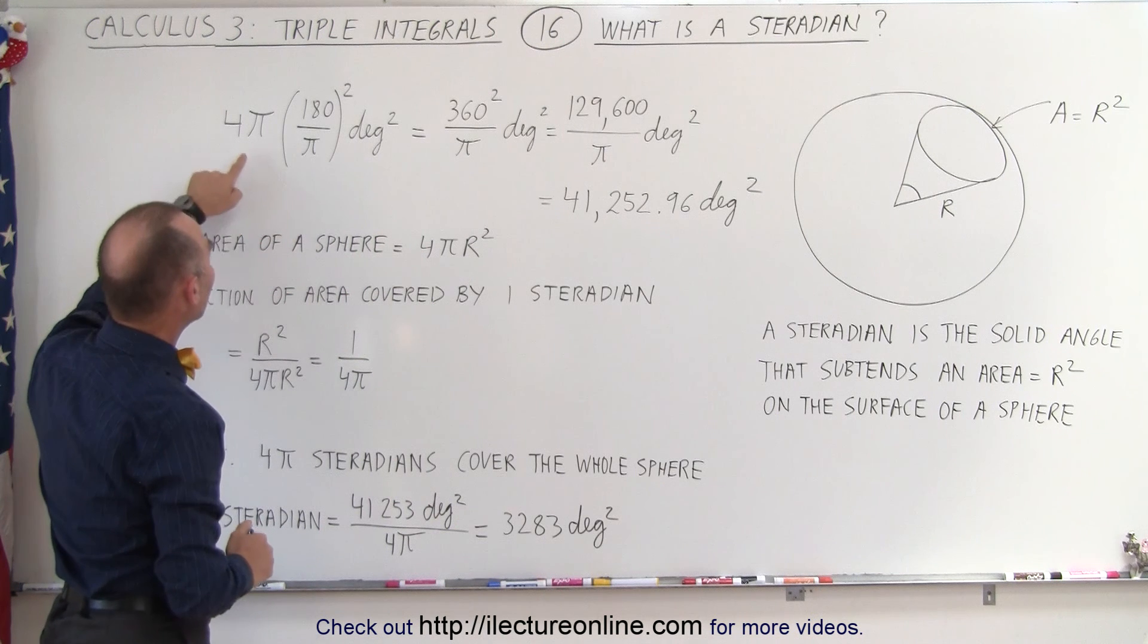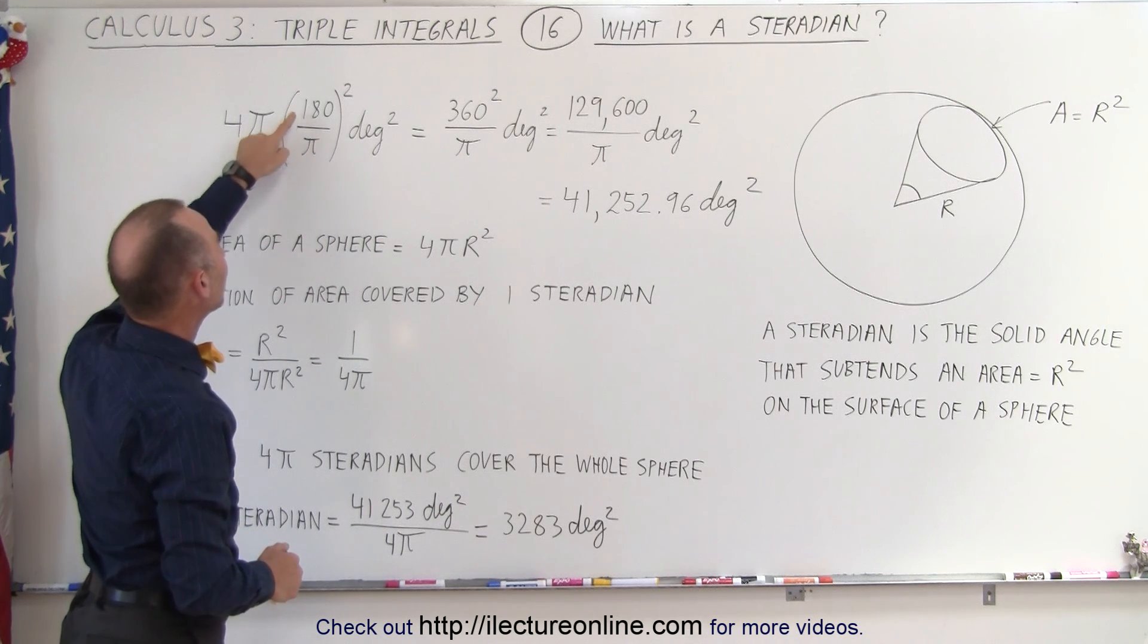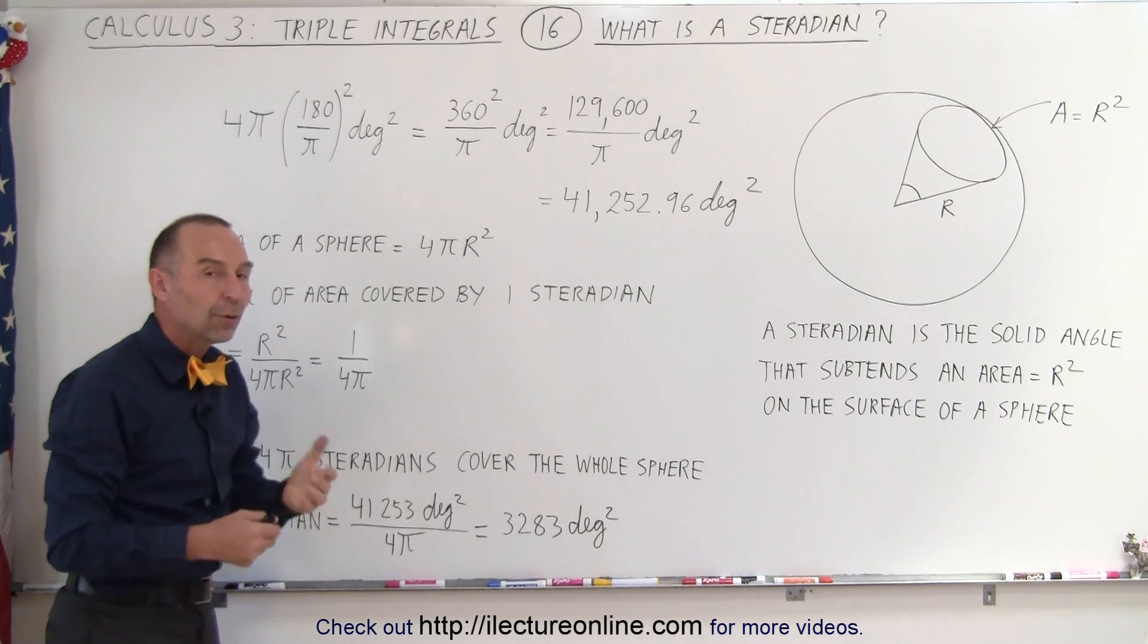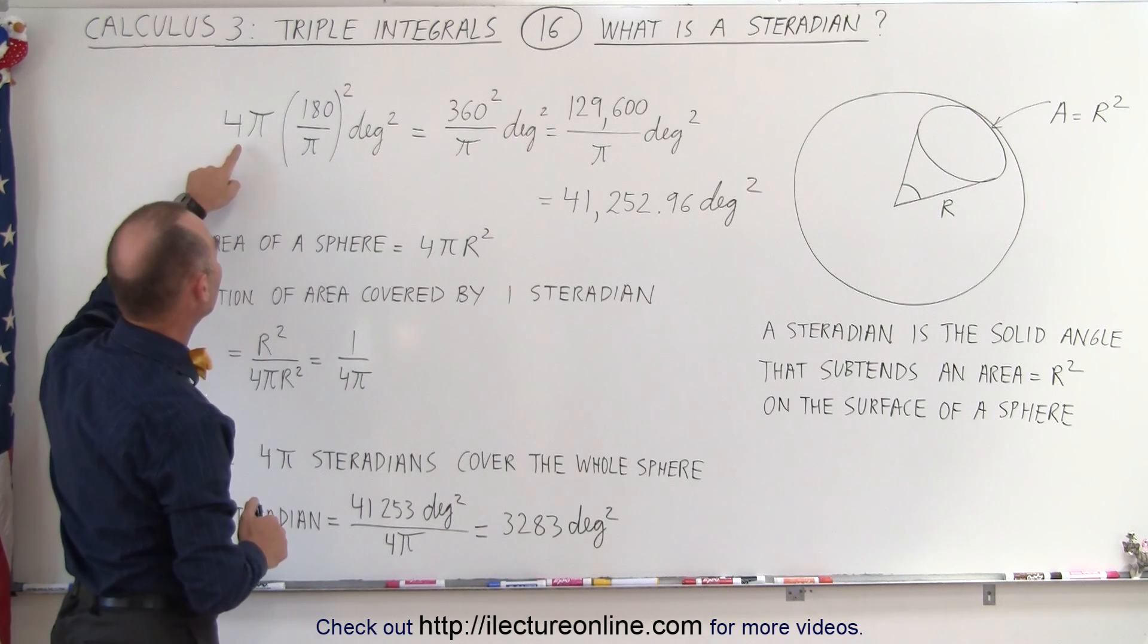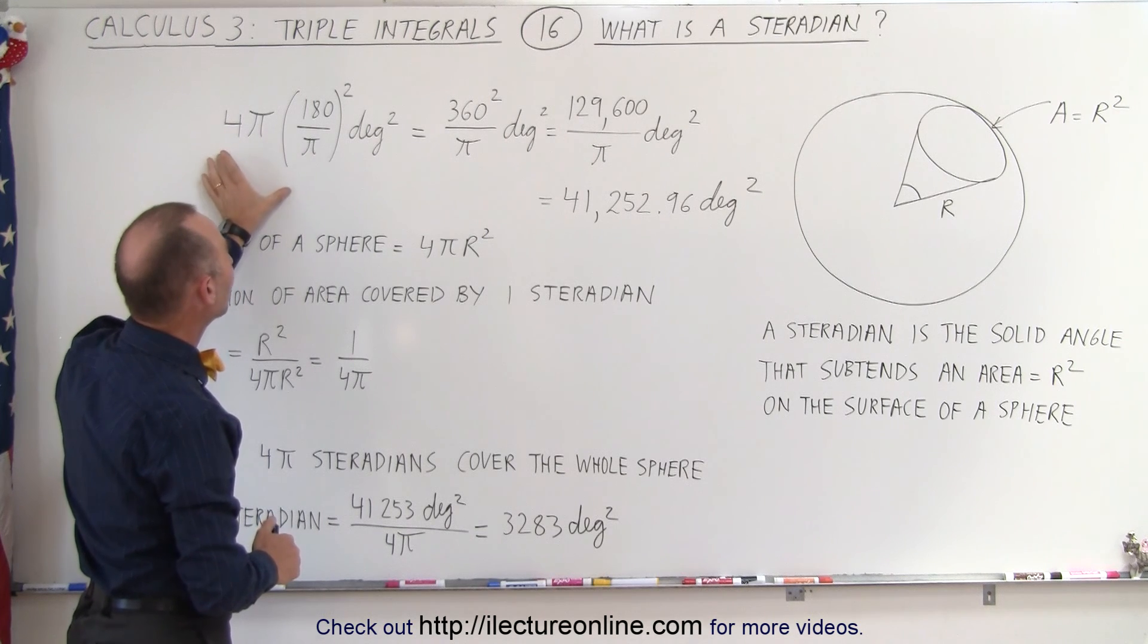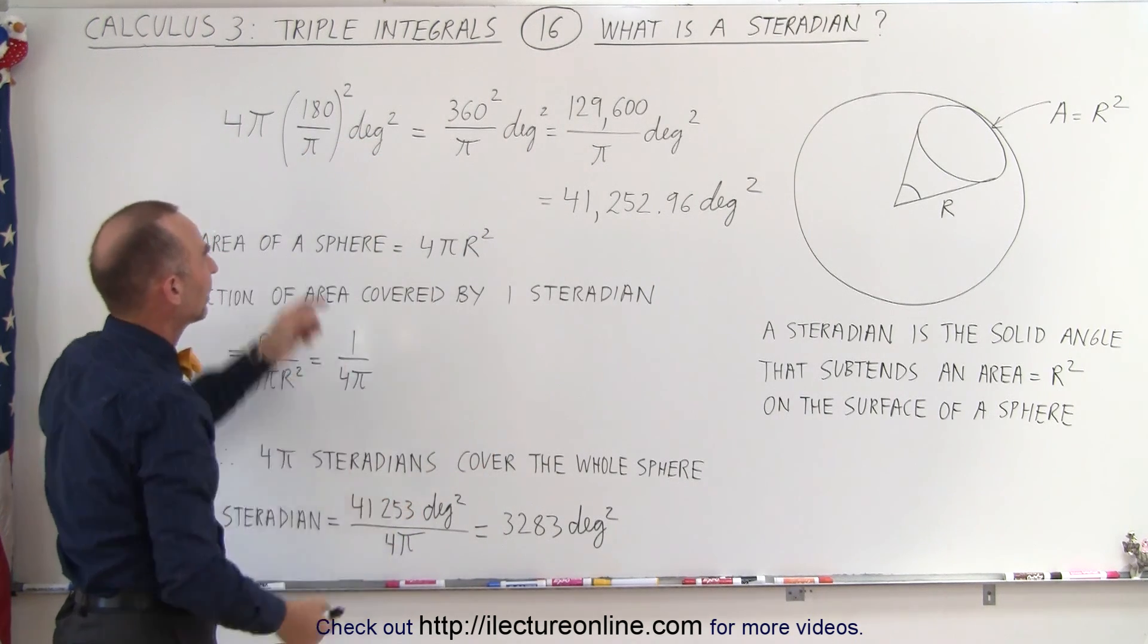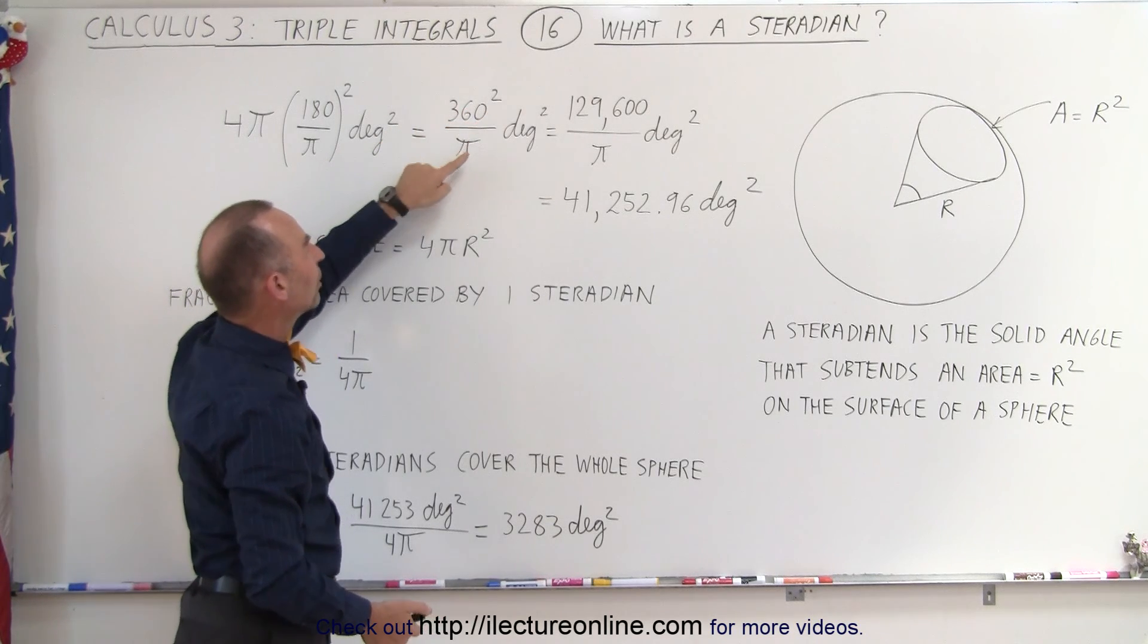This comes from the concept when we multiply 4 pi times the ratio of 180 degrees divided by pi. Now, 180 degrees divided by pi is the number of degrees in a radian, which is about 57.3 degrees. So when we multiply 4 pi times 57.3,